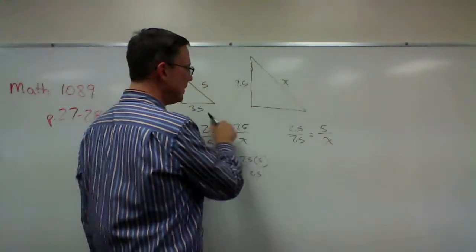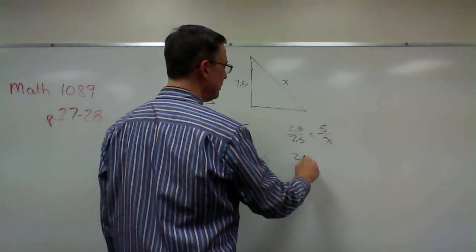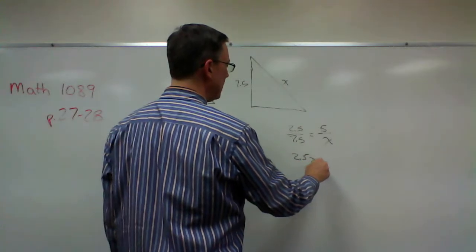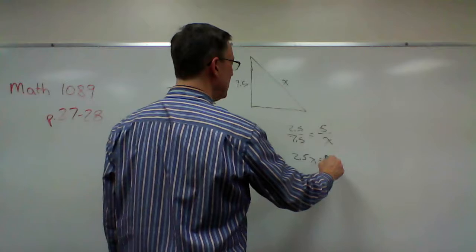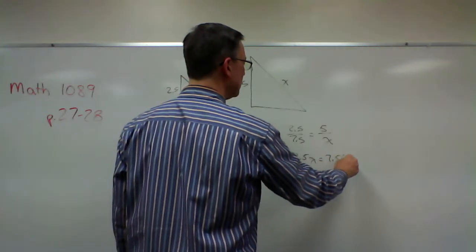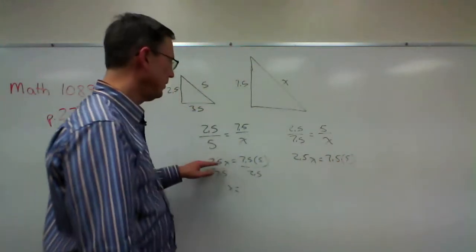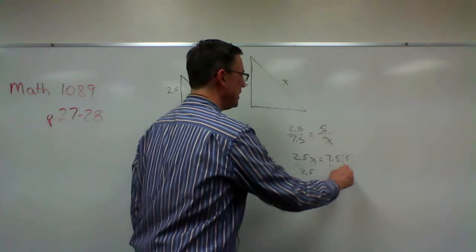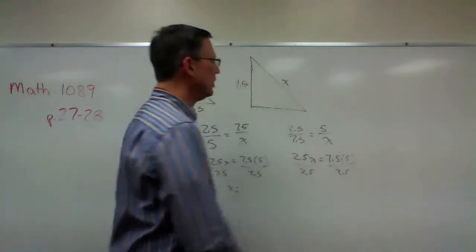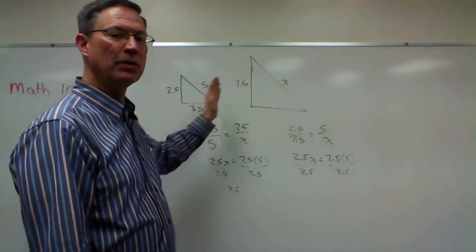Now even though this looks different than this, watch what happens when I cross multiply. 2.5x and then 7.5 times 5. Look, I have the same problem. It worked out exactly the same. So even though I did the ratio in a little different way, as long as the ratio is the same, it works.